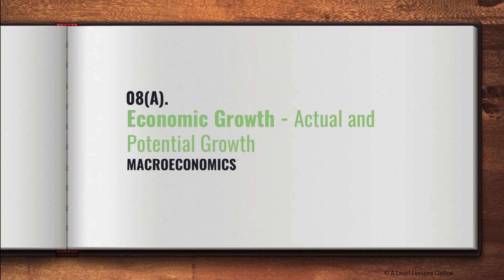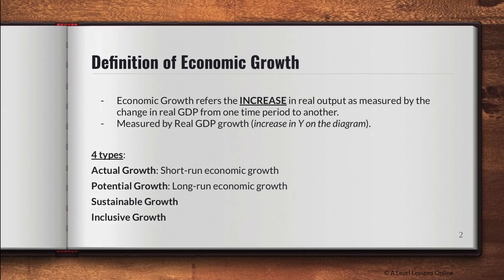In the previous few videos I've gone through the basics of AD-AS, the multiplier effect, GDP versus GNI, and standard of living. Economic growth ties everything together. Later on we'll look at inflation, price stability, unemployment, and balance of payments — these four are basically the main macroeconomic objectives that every government has.